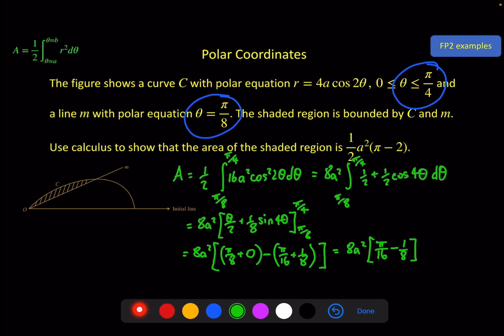Tidying this up we get 8a² times π/8 minus π/16 is π/16. And we've got minus 1/8. And then if I factorize out 1/16 that gives us the result we need. a²/2 or ½a² times π and taking out 1/16 leaves a 2 there. As required in the question.